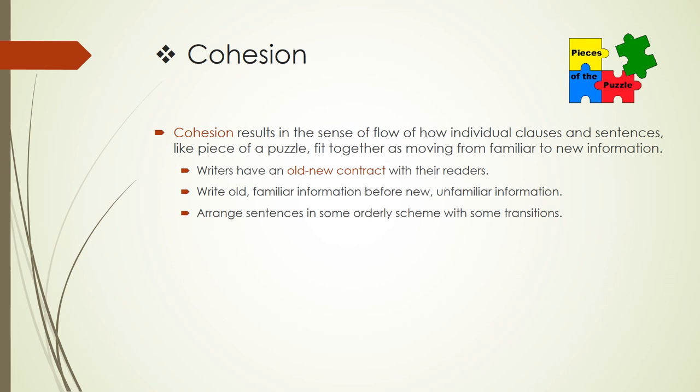The first key term is cohesion. Cohesion results in the sense of flow — how individual clauses and sentences, like pieces of a puzzle, fit together, moving from familiar to new information. Writers have an old-new contract with their readers: write old, familiar information before new and unfamiliar information. Arrange sentences in some orderly scheme with transitions. Readers experience cohesive flow when sentences start with familiar information — a familiar grammatical subject, familiar point of view, familiar transition, and familiar topic introduced in the prior sentence. Sentences are cohesive when the last few words of one sentence set up information that appears in the first few words of the next sentence — that's what gives us our experience of flow.